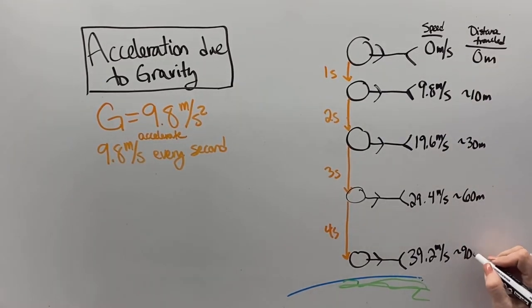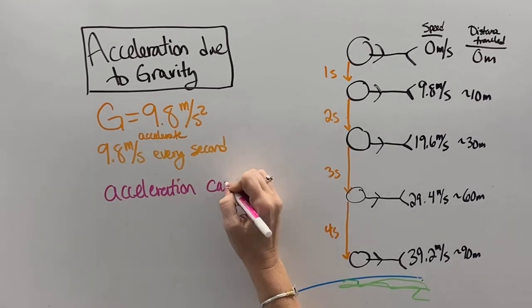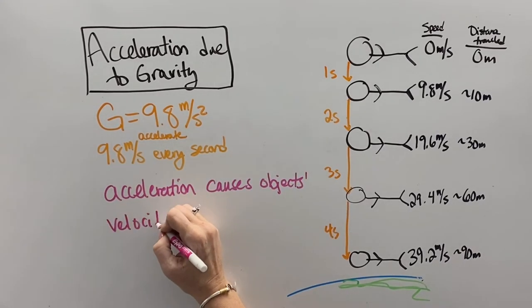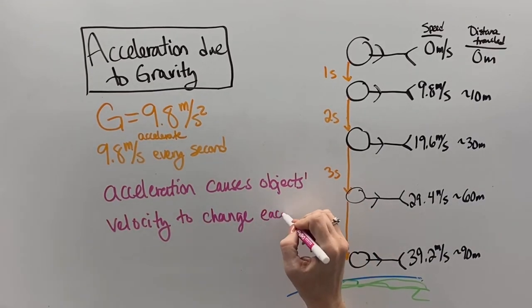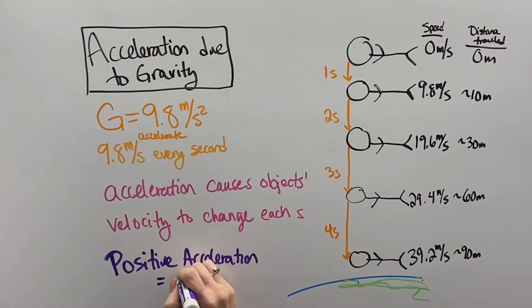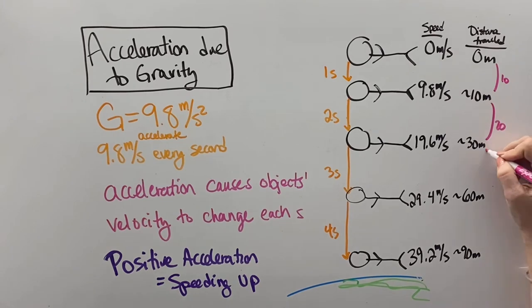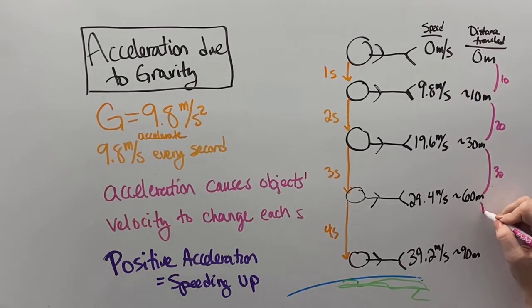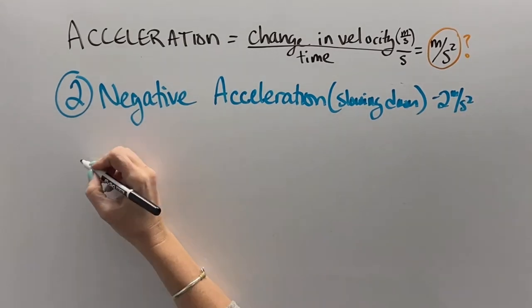Every second you would be falling quite a bit faster than the second before — that's the idea of acceleration. The acceleration due to gravity is pretty extreme; it causes an object's velocity to keep increasing each second. Gravity is considered a positive acceleration, meaning every second you're going to travel a greater distance — 10 meters in the first second, then 20 meters the next second, then 30 meters the next second, and so on.